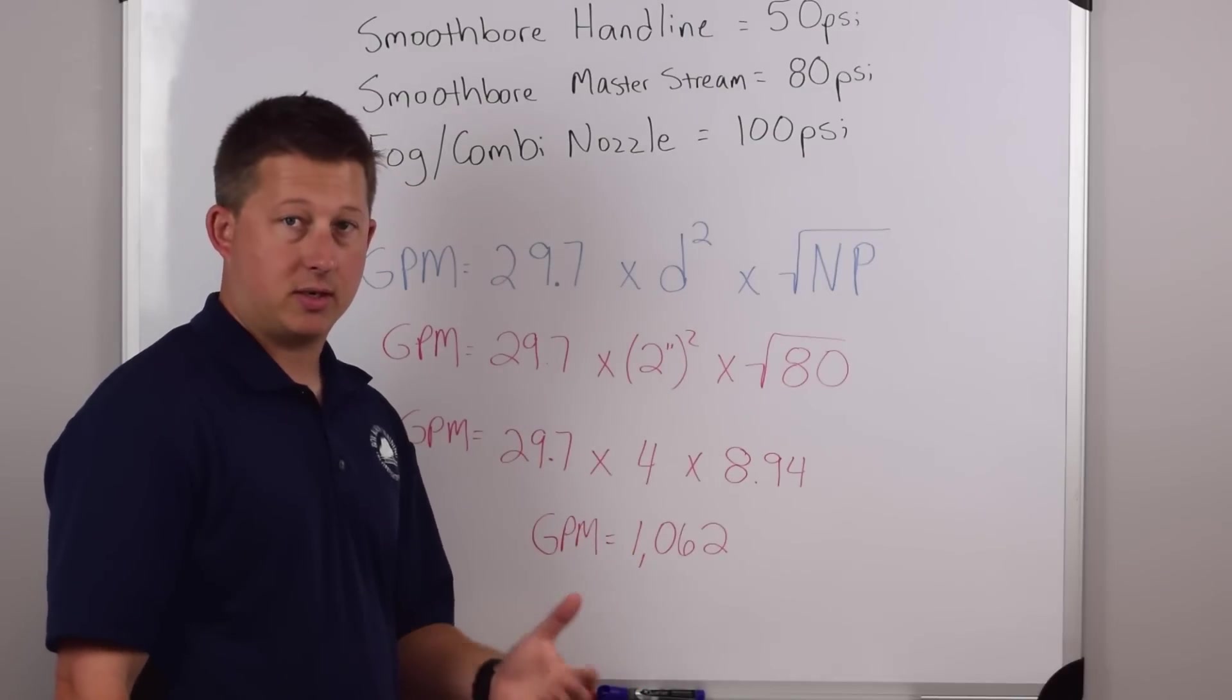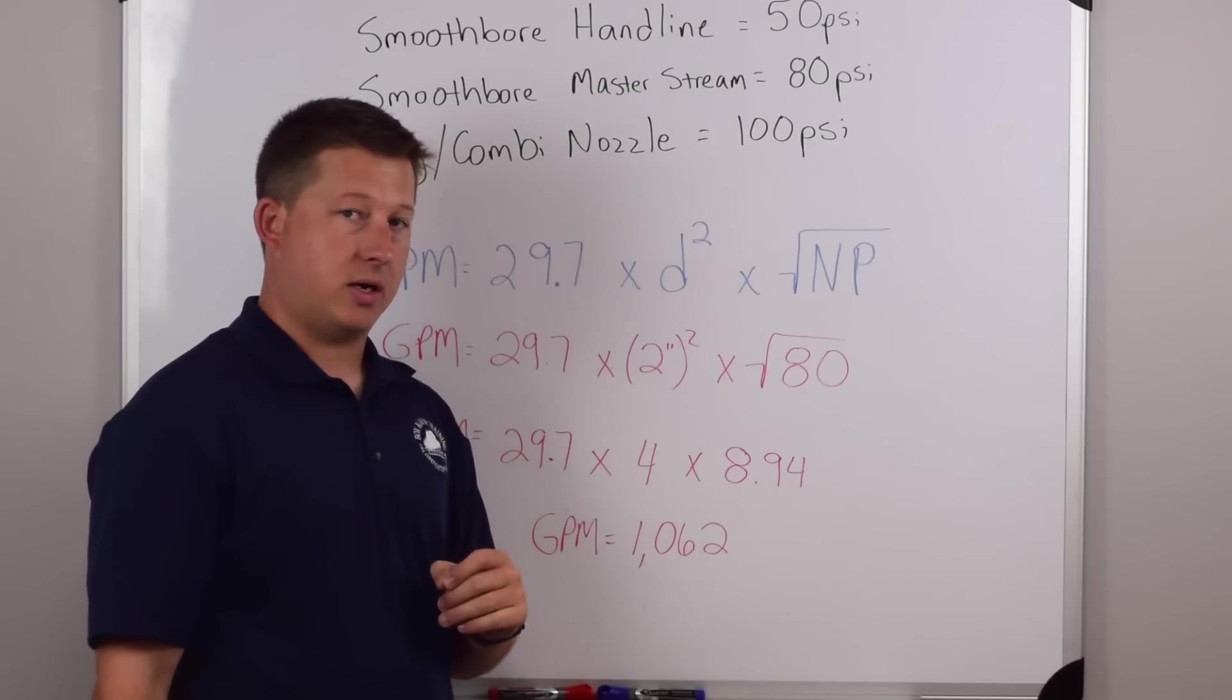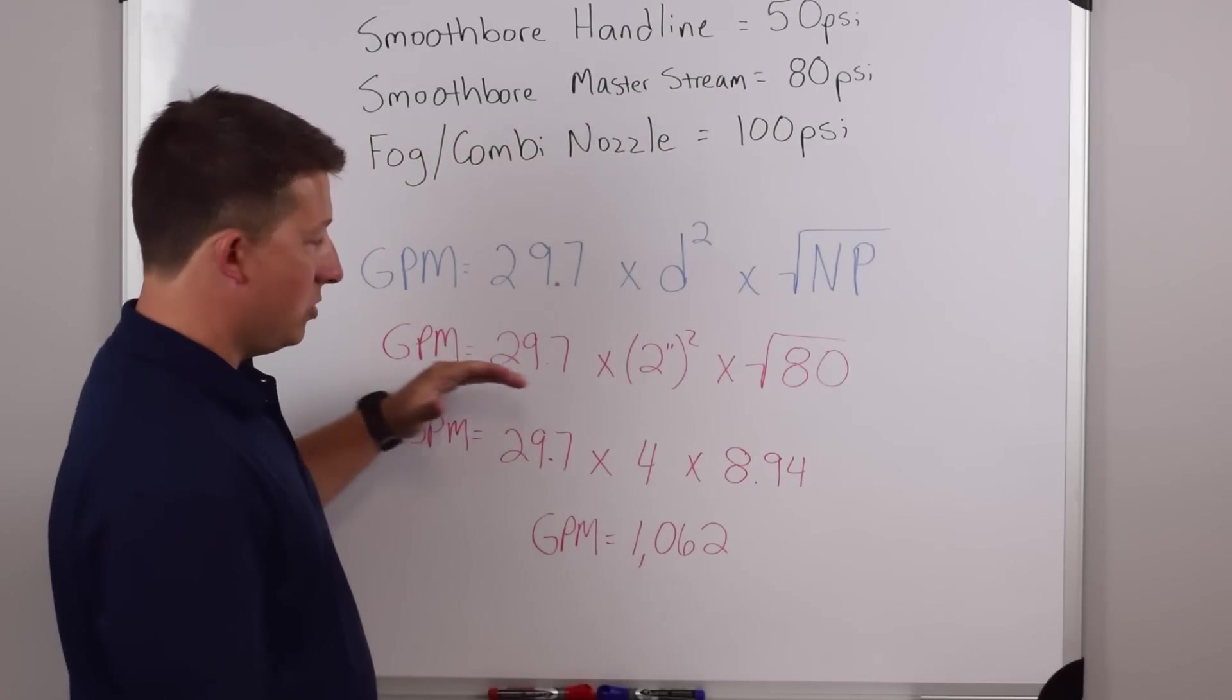That's just something I picked. It could be a different diameter, but I picked a two inch tip and now it's going to be flowing at 80 PSI nozzle pressure because it's a smoothbore master stream. So we do the exact same thing. We simplify the formula.